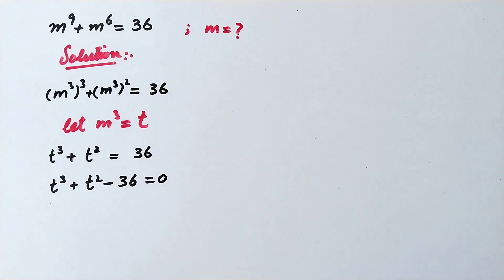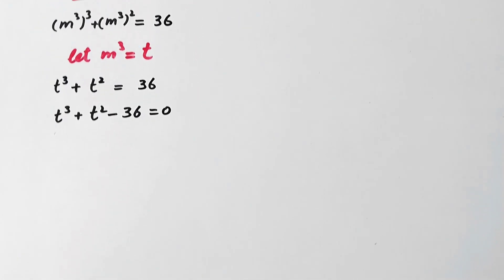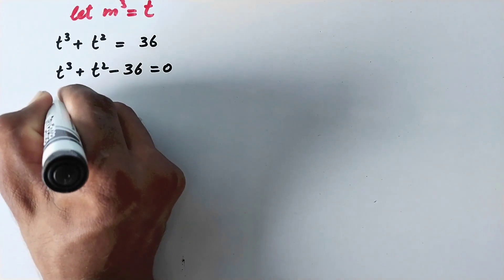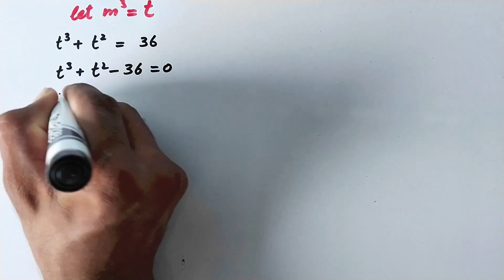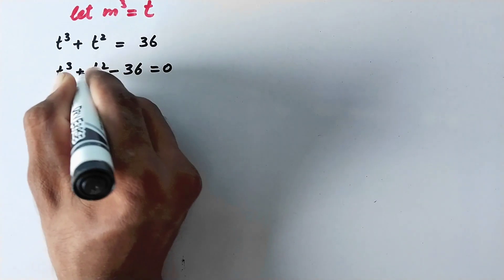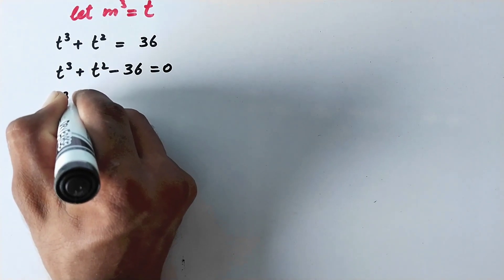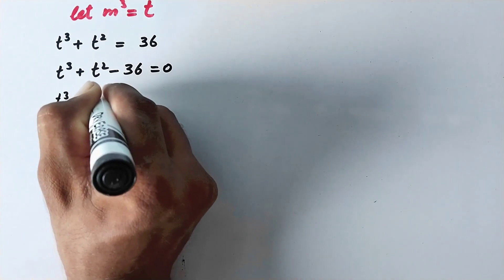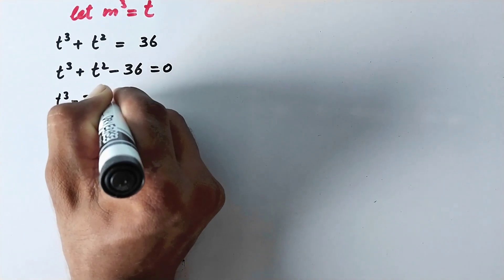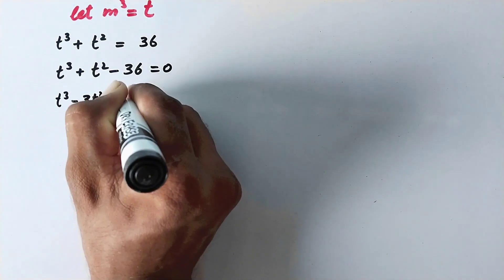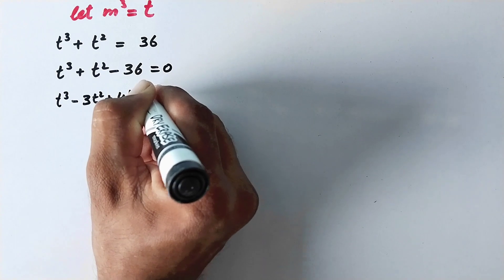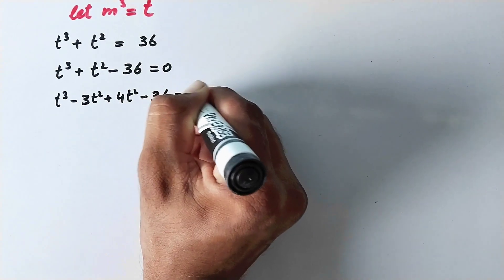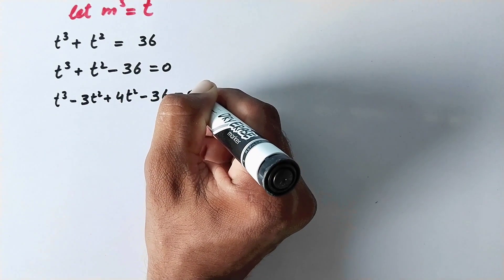Here we will split the terms: t cubed can be written as t cubed minus 3t squared, plus 4t squared, and minus 36 is equal to 0.